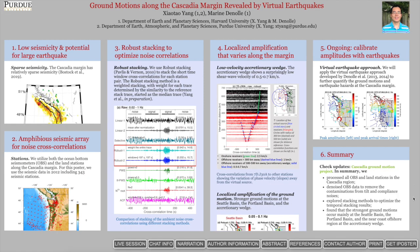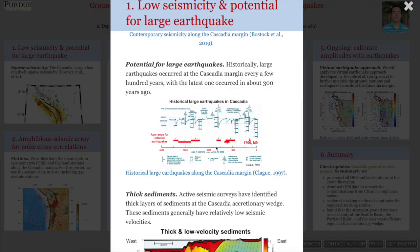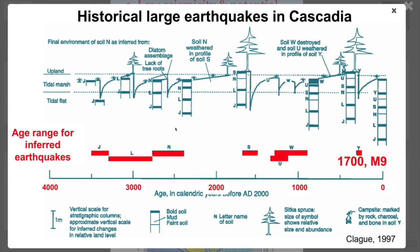In this study, we investigated the earthquake ground motions along the Cascadia subduction margin. We used virtual earthquakes from ambient noise cross-correlations. The distribution of contemporary earthquakes recorded by modern seismometers indicates relatively low seismicity in the Cascadia region. However, paleoseismological studies suggest a history of large earthquakes every few hundred years, with the latest magnitude 9 earthquake occurring about 300 years ago.